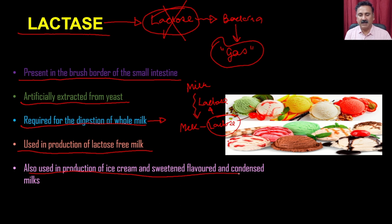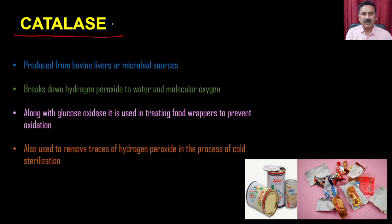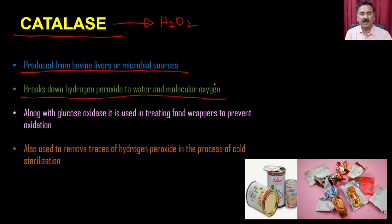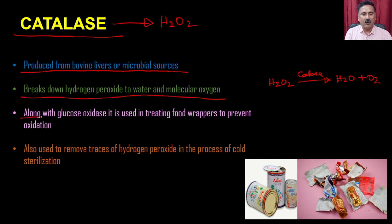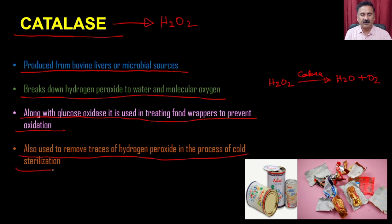Lactase is also used in the production of ice cream, sweetened flavor products, and condensed milk. The third enzyme is catalase, which degrades hydrogen peroxide. Produced from bovine liver or microbial sources, it breaks down hydrogen peroxide to water and molecular oxygen: H₂O₂ → H₂O + O₂. Along with glucose oxidase, it is used for treating food wrappers to prevent oxidation and also used to remove traces of hydrogen peroxide in the process of cold sterilization, thus preserving food material.